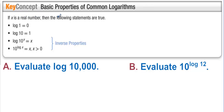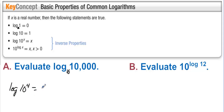If x is a real number, the following statements are true for the common log (base 10). Log of 1 is 0. If the base isn't written, it's 10. So 10 to the 0 is 1, 10 to the 1 is 10, 10 to the x is 10 to the x, and if both bases are 10, they cancel to x. Evaluate log base 10 of 10,000: that's log base 10 of 10 to the 4th, so it evaluates to 4. Evaluate 10 to the log 12: both bases are 10, so this equals 12.